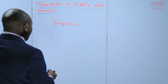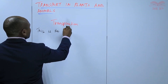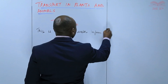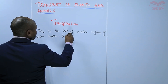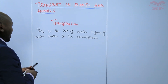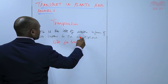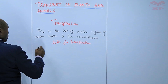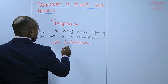So I will start by defining transpiration. And this is the loss of water in form of water vapor to the atmosphere. Then we'll have the sites for transpiration — there are three. One is the stomata, and this one we call it stomatal transpiration.